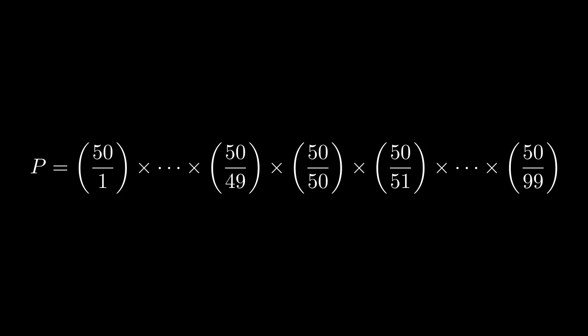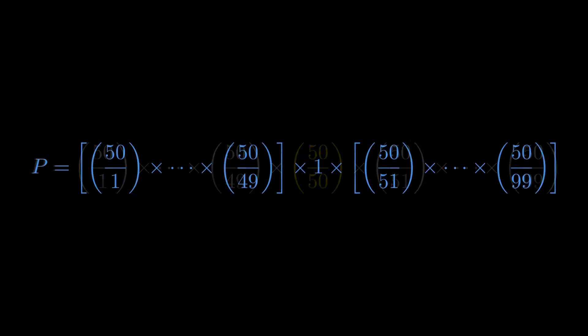Let me write out this product more explicitly, showing the terms around the middle. Notice the term right in the center: 50 divided by 50. This term is the fulcrum of everything. It's exactly equal to 1, so we can just replace it with 1.